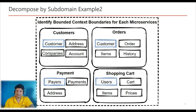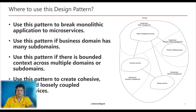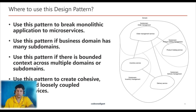We can say microservices can represent a bounded context or a part of it. A bounded context can create more than one microservice — this decision is based on the microservice's needs for scalability and independence. While a bounded context defines the boundaries of the domain, microservices determine the technical and organizational boundaries. Use this design pattern whenever you want to break a monolithic application into microservices, especially if the domain has multiple subdomains or there is a bounded context across multiple domains.